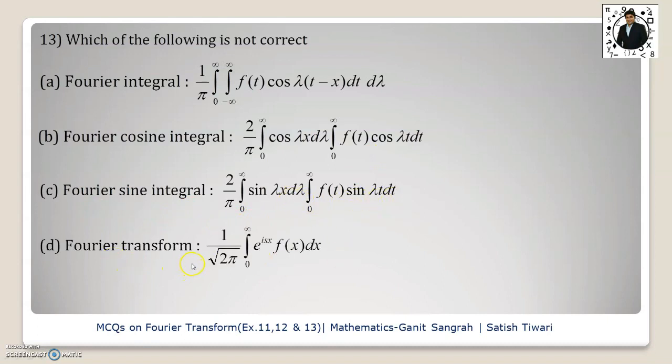And option d is Fourier transform. This formula is incorrect because of the limits of integration. Here, the lower limit should be minus infinity. So, option d is the correct option which is not correct.